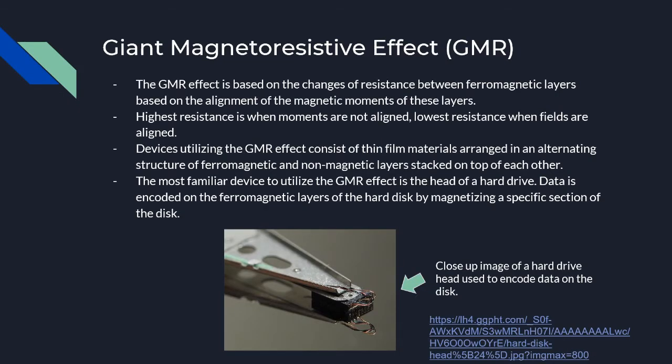The giant magnetoresistive effect, or GMR, was discovered in 1988, and it sparked the field of spintronics research. The GMR device consists of thin film materials with alternating ferromagnetic and non-magnetic layers. The resistance is lowest when magnetic moments in ferromagnetic layers are aligned, and highest when they are not aligned. This is how the head in a hard drive scans across the platter and reads and writes data. For writing, the resistance is changed by magnetizing a specific area of the platter, or the ferromagnetic layer of the hard drive.